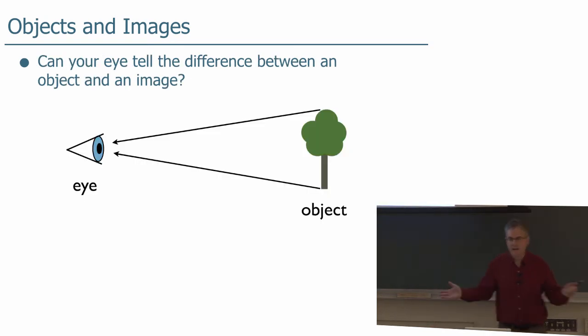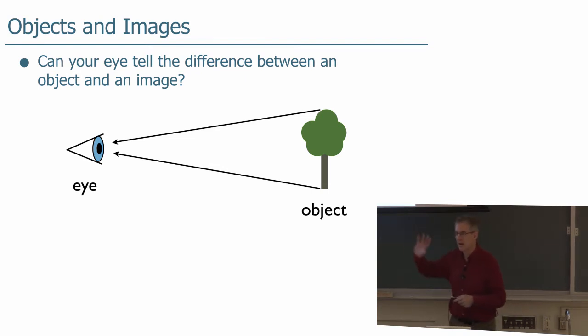Now, can your eye tell the difference between an image of an object and the object itself? Well, if you have an object, the light from the bottom of the object going toward your eye, the light from the top of the object, or any other point on the object toward your eye, is how you see the object. Now, if you have an image instead, how would you know the difference?